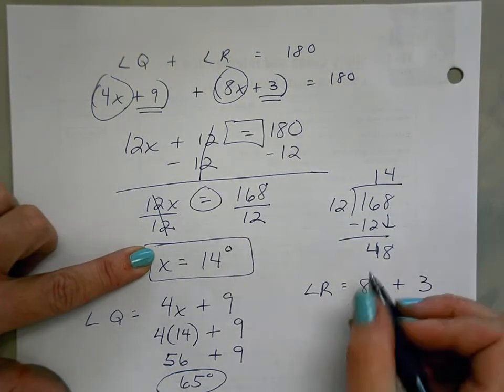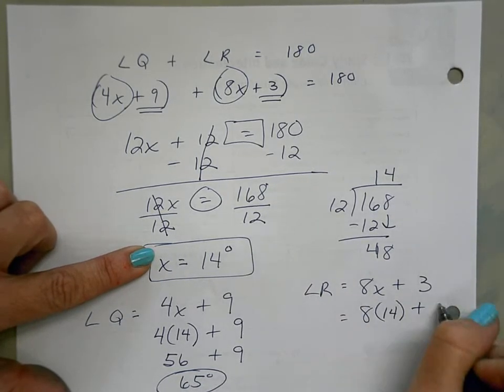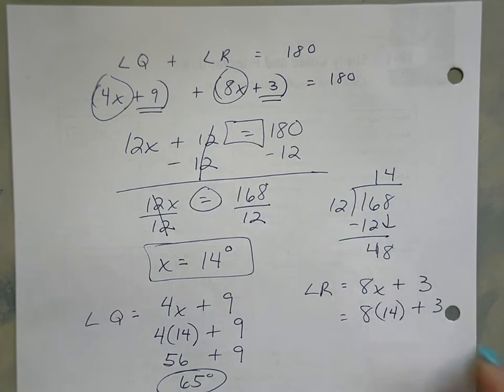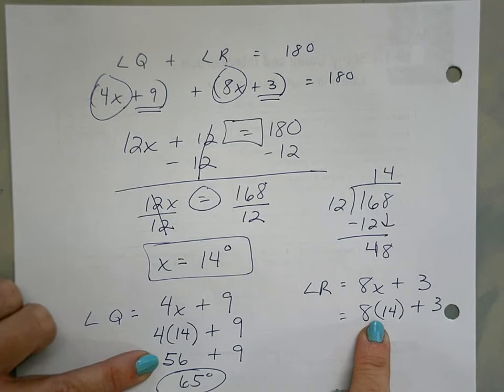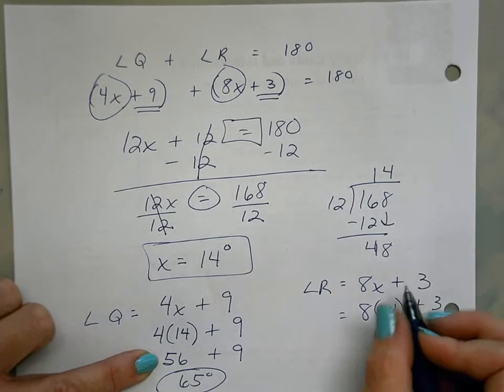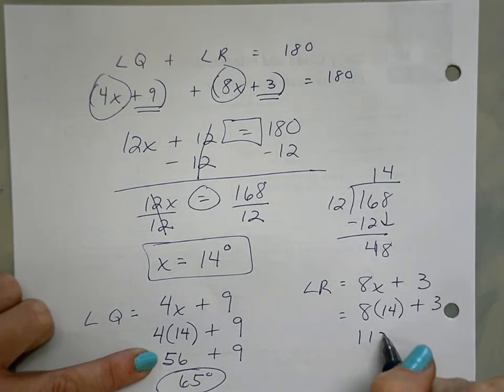Now x is 14, so I can substitute: 8 times 14 plus 3. So 8 times 14 - 4 times 14 is 56, so 56 times 2 is 112 plus 3.